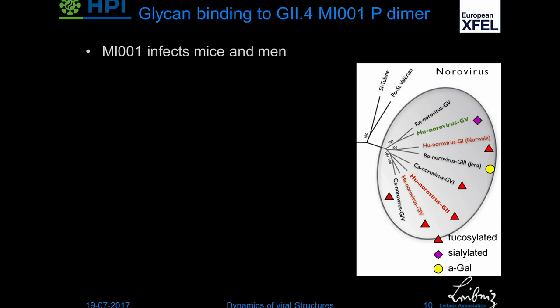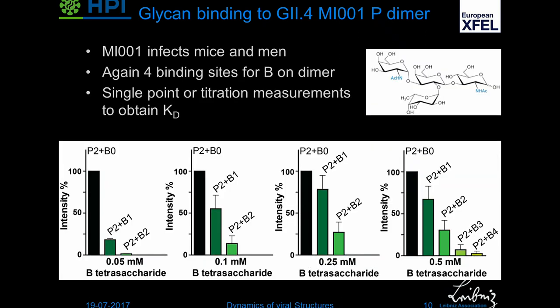We also went to another strain, MI001, which belongs to the same genogroup as the one we've looked at before, which usually infects humans, meaning they bind to fucose. But this one can also infect mice, and usually murine noroviruses bind sialic acid. So if this one can infect both, the obvious question is: can it bind both? We first looked at whether it retained binding to fucose by titrating in the B saccharide — and indeed we see it binds, and we also see the four binding sites again.